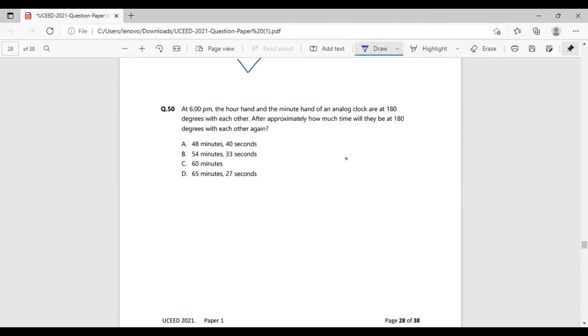Which of these different parts correctly represents 180 degrees between the hour hand and the minute hand of the clock? We have to figure this out. Talking about part A, 48 minutes and 40 seconds afterwards 6 p.m. It would be 6:48 and 40 seconds. Clearly, if we look at the clock, it is not 180 degrees.